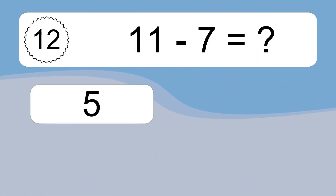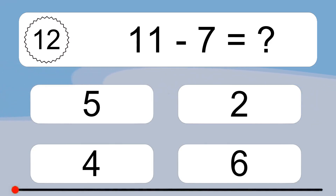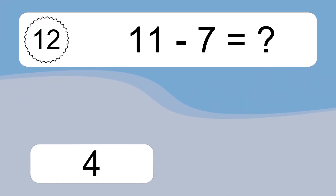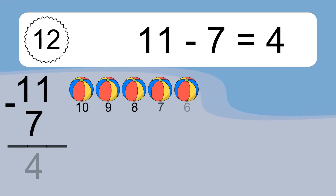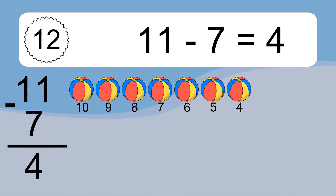11 minus 7 equals what? 11 minus 7 equals 4. Let's count it: 10, 9, 8, 7, 6, 5, 4.